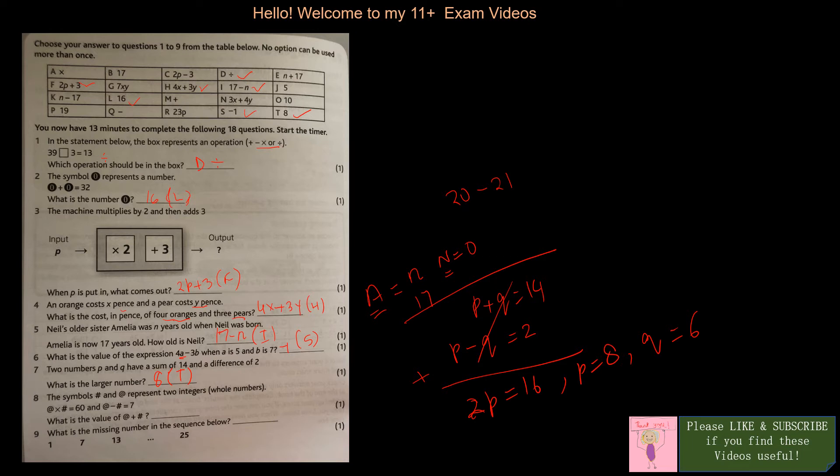The symbols hash and at the rate represent two integers or whole numbers. At the rate times hash equals 60, and at the rate minus hash equals 7. If you look at the factors of 60, you will get 5 and 12. 5 times 12 is 60, and 12 minus 5 is 7. So what is the value of at the rate plus hash? It is 12 plus 5, that is 17. That is in B.